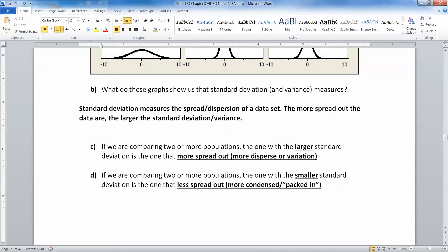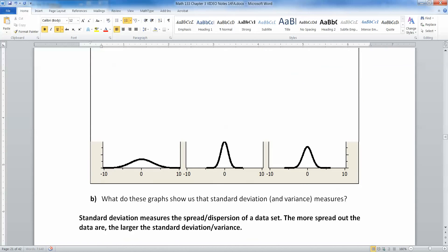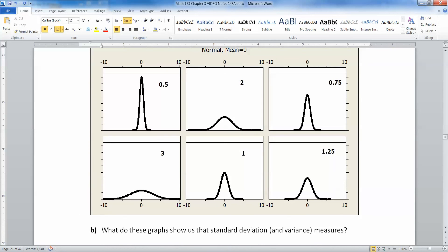If you're comparing two or more populations, the one with a larger standard deviation is going to be the one that's much more spread out, more dispersed, more variation. If you are comparing two or more populations, the one with a smaller standard deviation is the one with less spread. It's more condensed. It's more packed in. So again, think of these two pictures, top left and the bottom left. Bottom left is very spread out, big standard deviation. Top left is very tiny, very packed in, so very small standard deviation. And the variance would go with that.